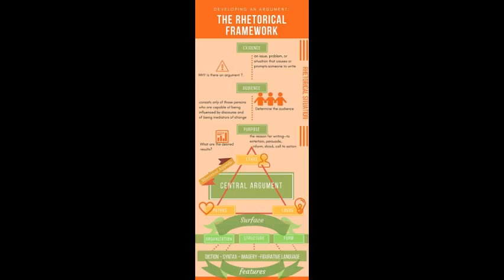The second part is the central argument, and I made that a larger box because it's really the core of the entire thing. There is a triangle around it, and with the triangle we use the rhetorical appeals. Writers can appeal to their audience using either ethos, pathos, and logos. Now these three things are often very difficult for students to remember.